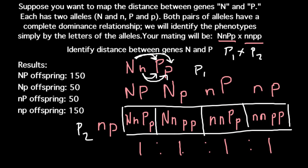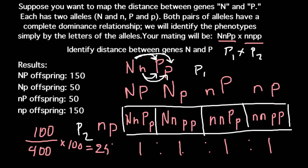And we can find the distance between these genes — it is very easy to do. First, we find the number of recombinants, which is 100, and divide this by the total number of genotypes, which is 400. If we need the answer in percentage form, we multiply by 100. Our answer would be 25%, or we can also say 25 centimorgans or map units.